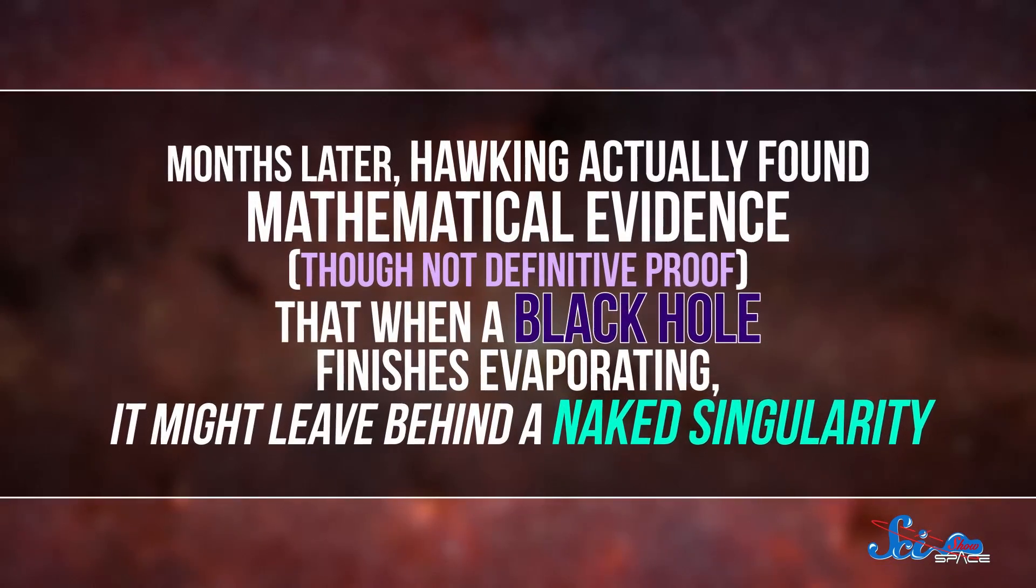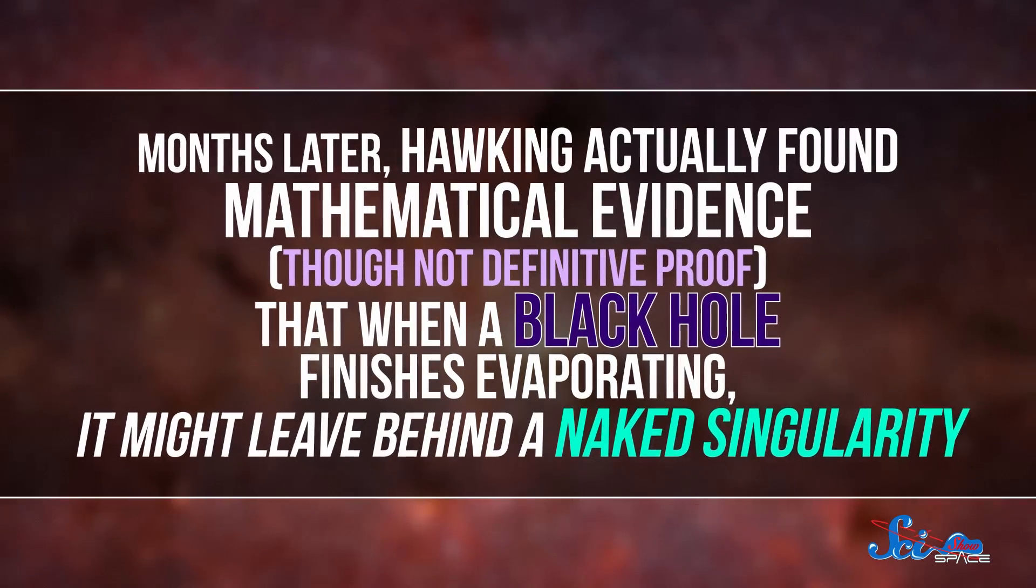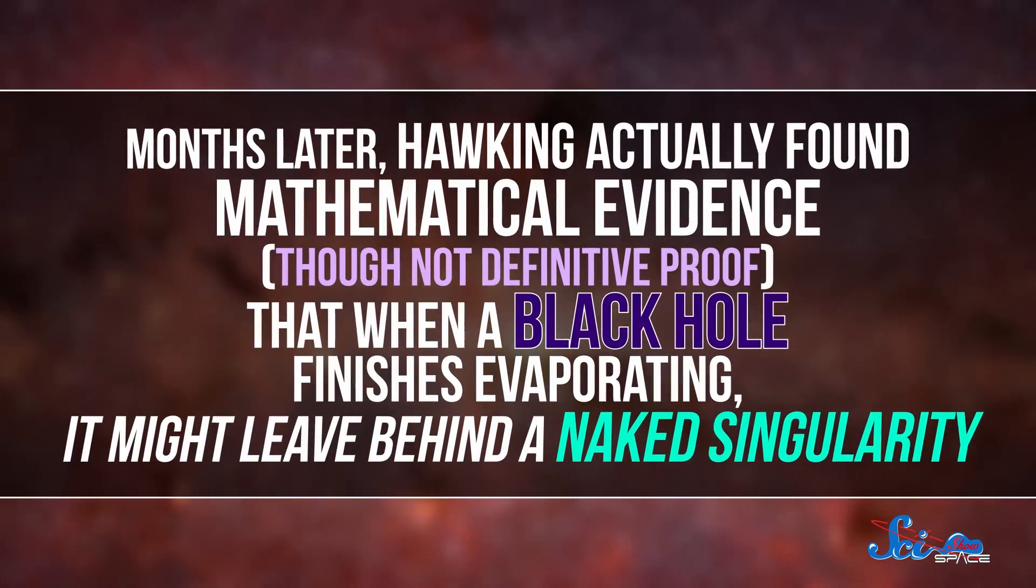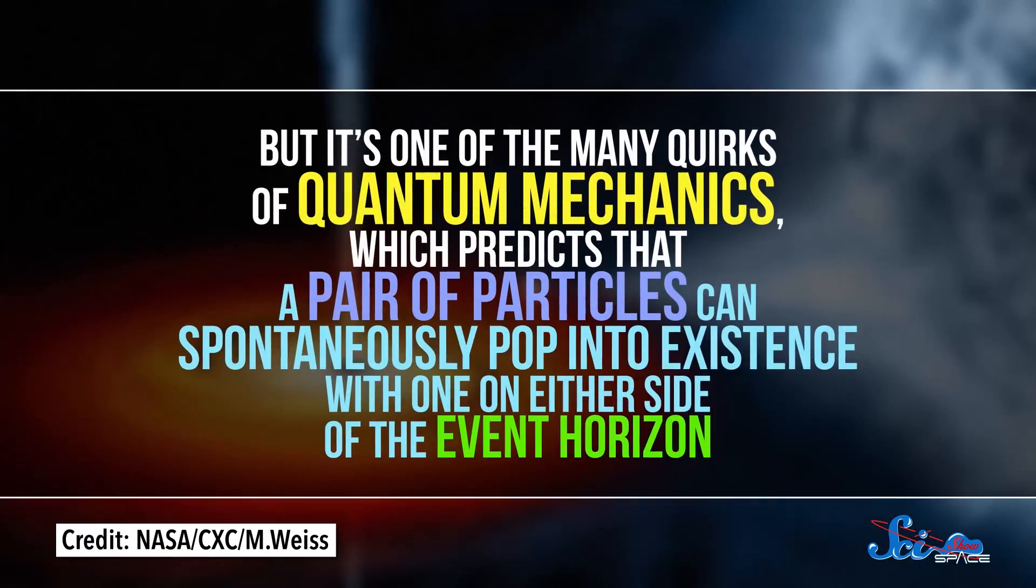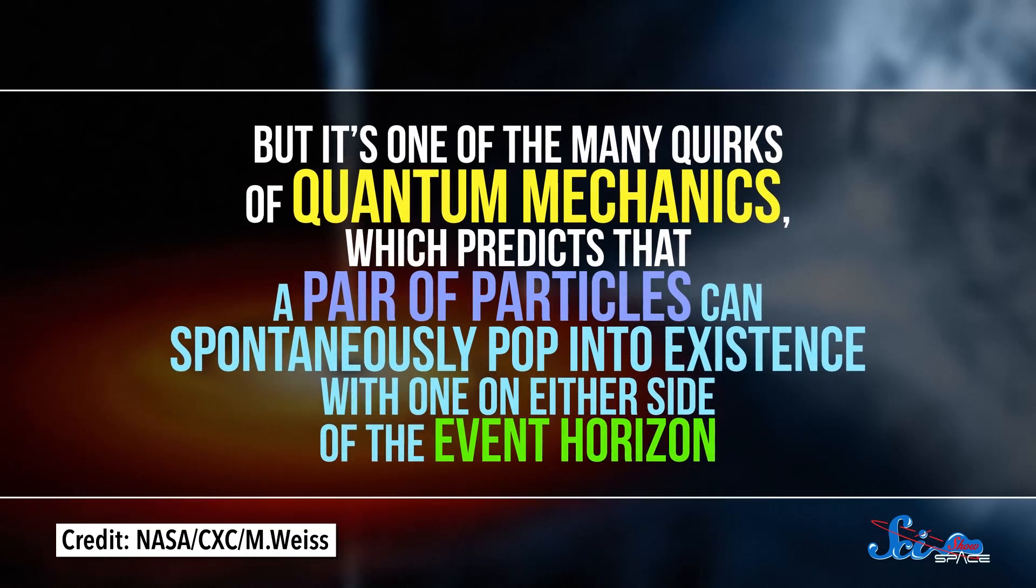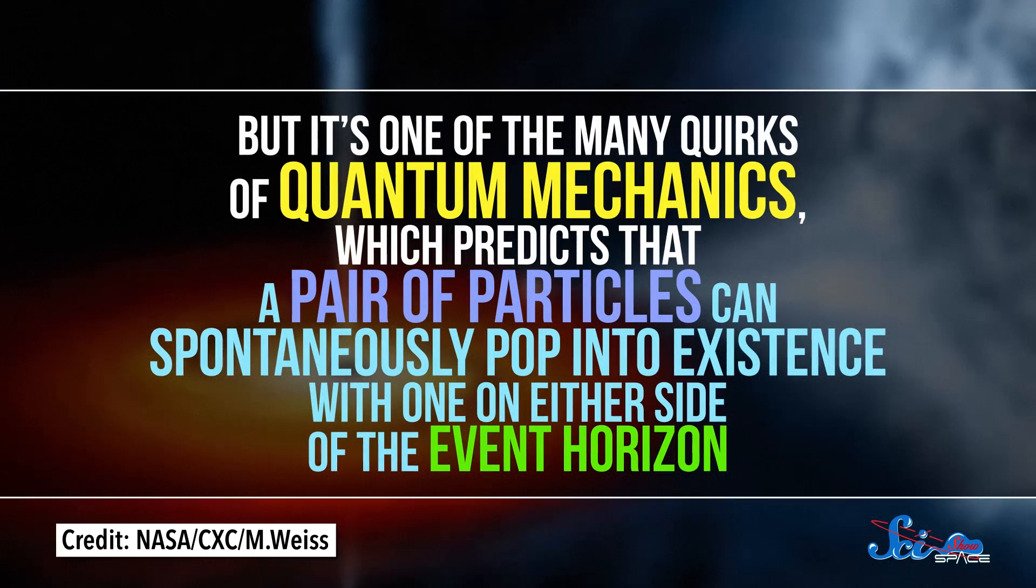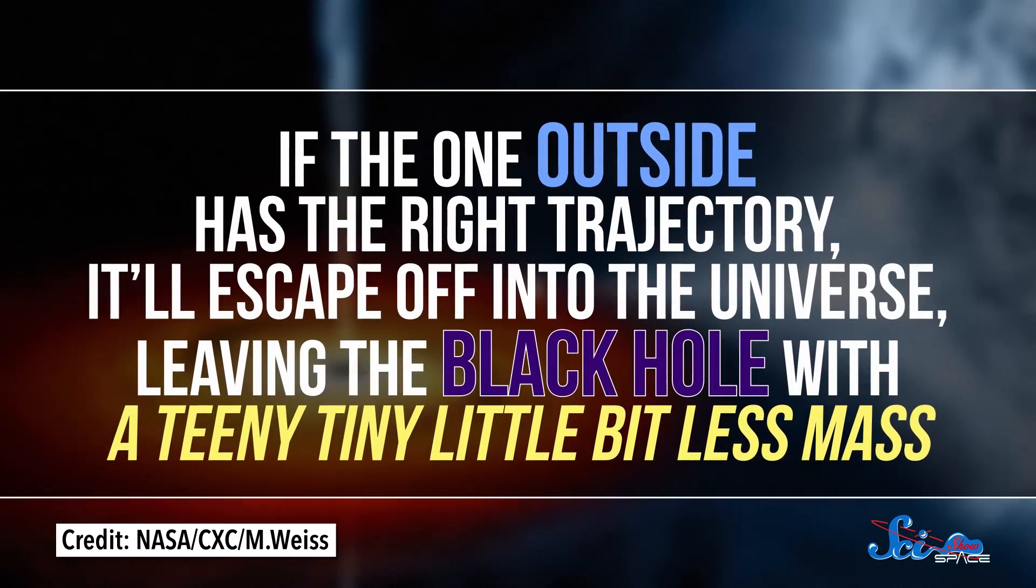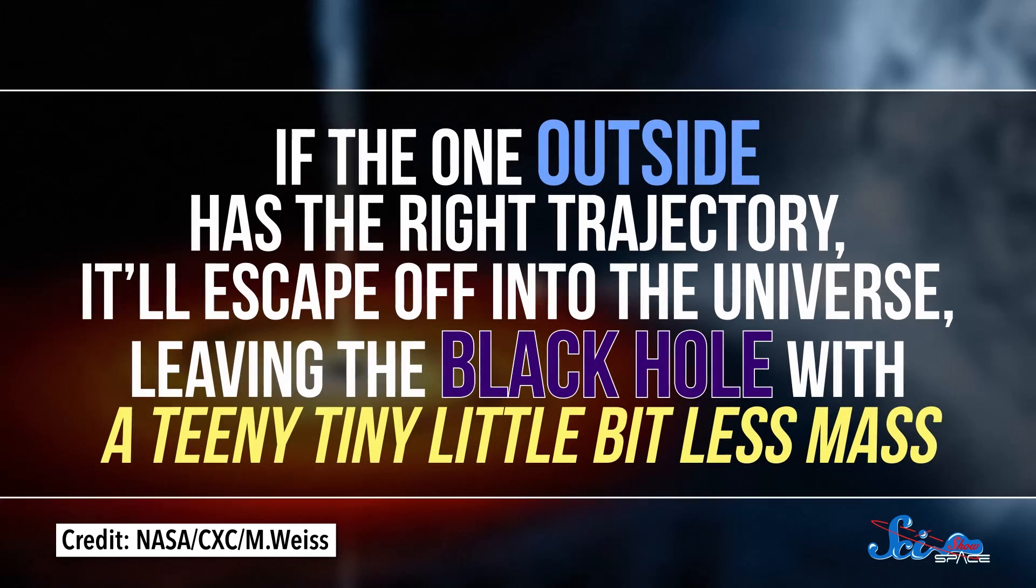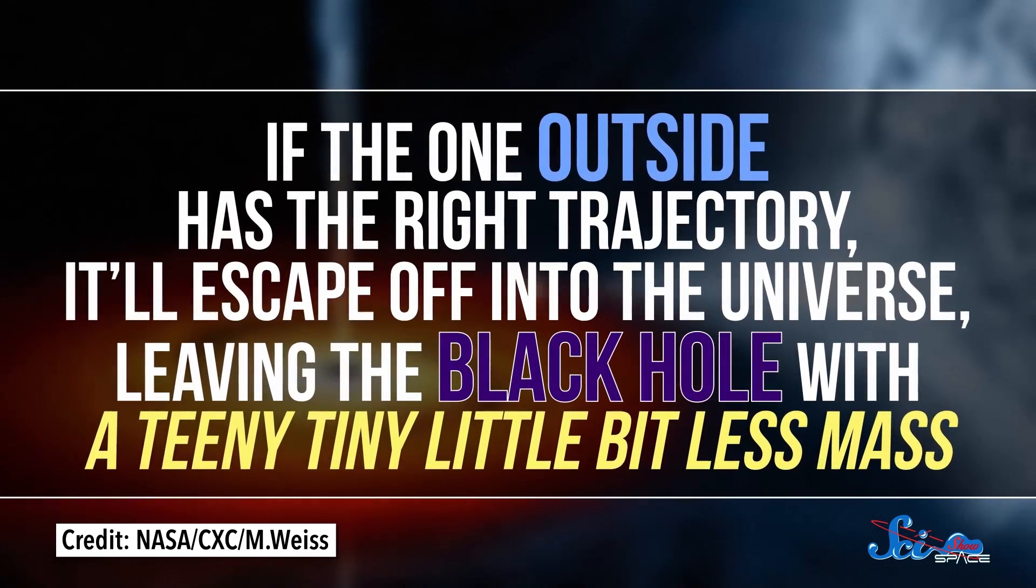Months later, Hawking actually found mathematical evidence, though not definitive proof, that when a black hole finishes evaporating, it might leave behind a naked singularity. If the idea of a black hole evaporating sounds super strange, well, it is. But it's one of the many quirks of quantum mechanics, which predicts that a pair of particles can spontaneously pop into existence with one on either side of the event horizon. If the one outside has the right trajectory, it'll escape off into the universe, leaving the black hole with a teeny tiny little bit less mass.